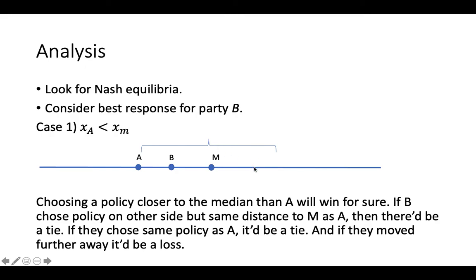If B is here, for instance, they're going to split half the votes between A and B, and then they're going to get all these votes. And because A is farther away on this side, B is going to get more than 50%.